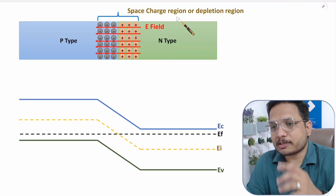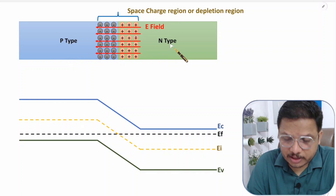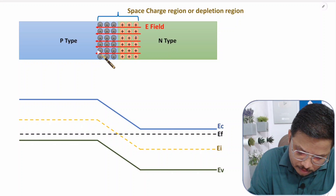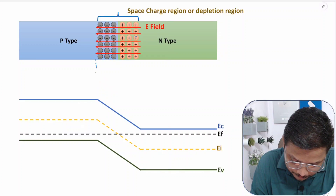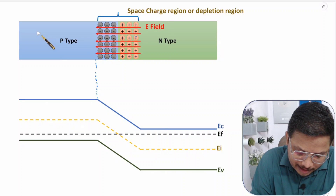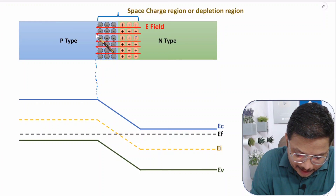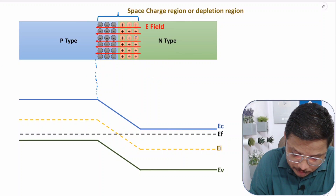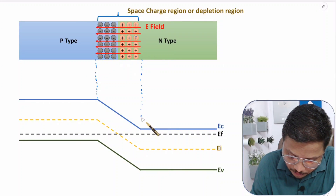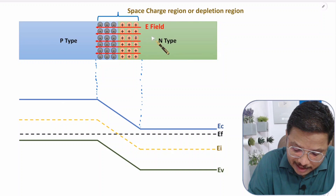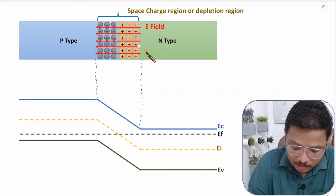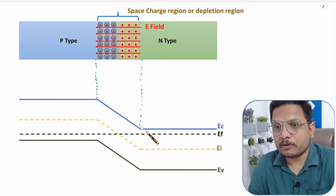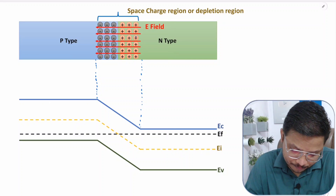Let us try to understand how P-N junction energy band diagram is there. Up to one point there is P-type section only with no ions. And up to another section there is N-type with no ions. Over at the junction, we are having positive ions on the N-type side and negative ions on the P-type side. That is how the basic consideration is there.